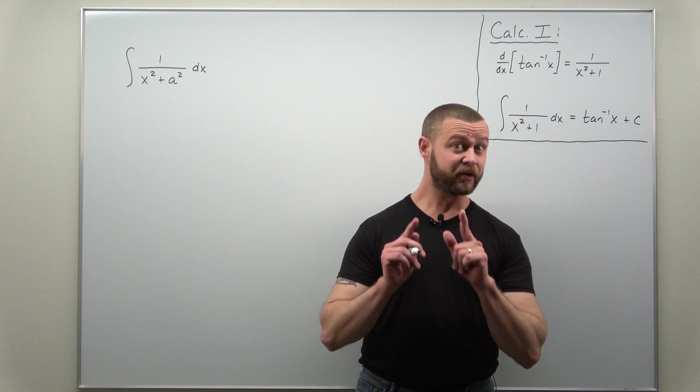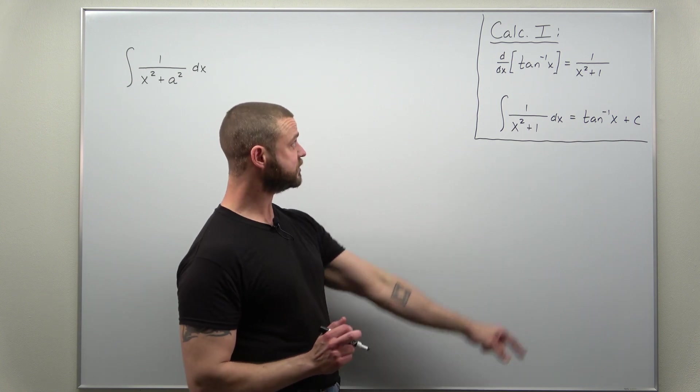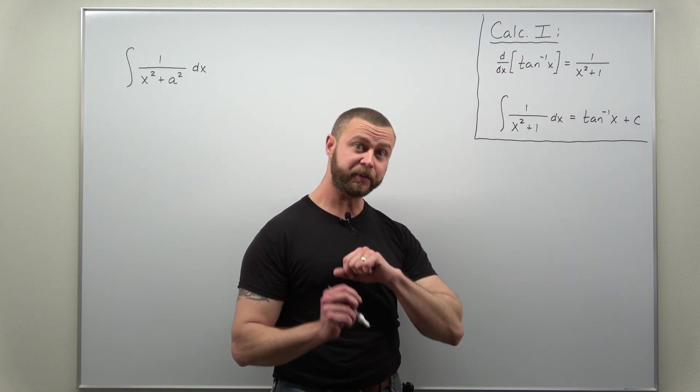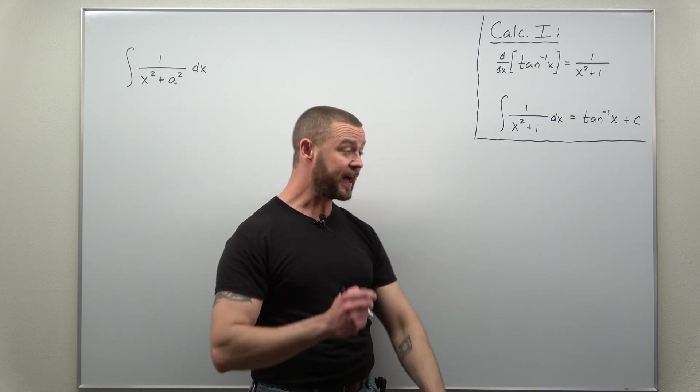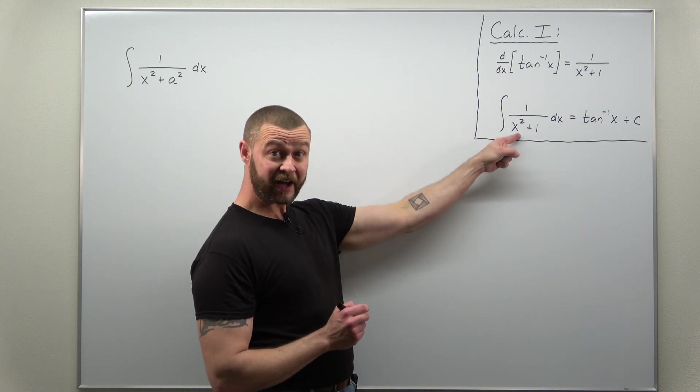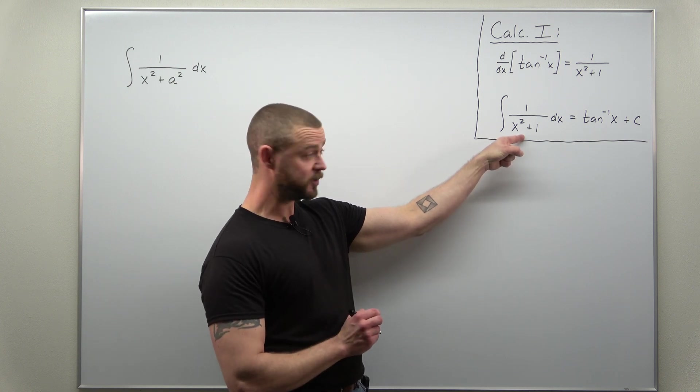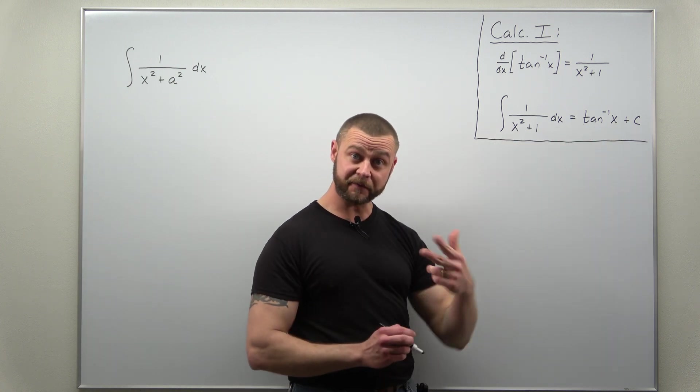Now a basic result from your Calc 1 course: the derivative of inverse tangent is 1 over x squared plus 1. You can reverse that as an antiderivative statement. Your antiderivative for 1 over x squared plus 1 comes out to be inverse tangent.